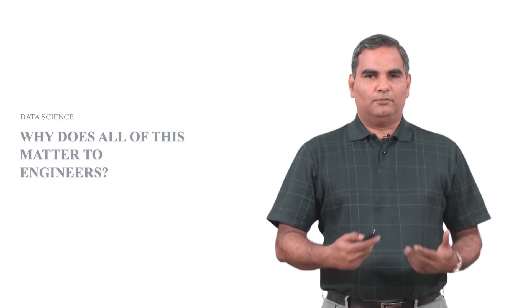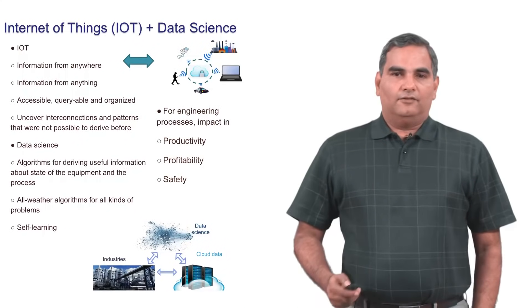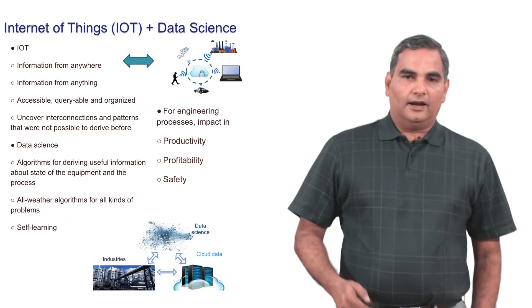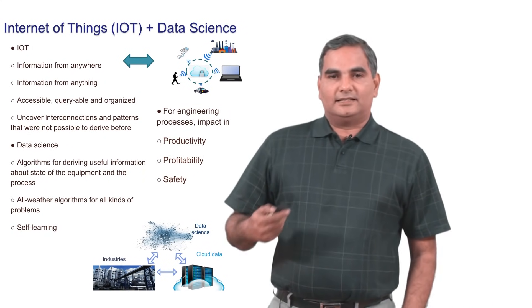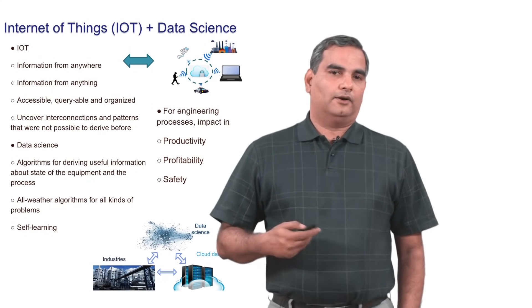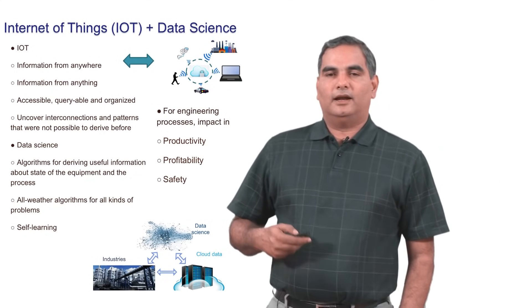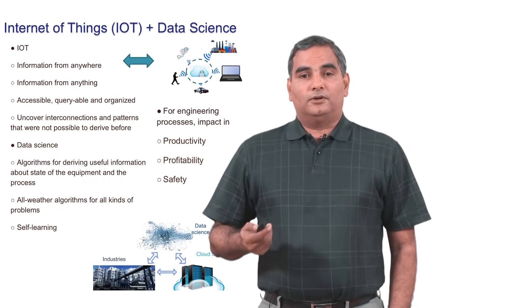Now that we have talked about Big Data and Data Science, we might ask this question: why does all of this matter to engineers? It looks like most of this is being bandied about and talked about in terms of social context. The important thing to note is that with engineering plants of the past, you did not have lots of data. But with this new notion of Internet of Things, where you have information from anywhere and information from anything—not only do you have information from anywhere and anything, but this information is also accessible, queryable, and organized—this gives hope that you could actually uncover interactions and patterns that were not possible to derive before.